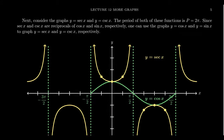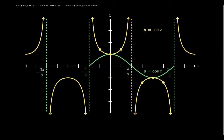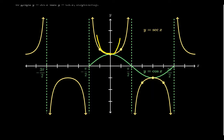You can see the graph of secant presently on the screen illustrated here in yellow. The graph of cosecant looks like these buckets — every once in a while you have a bucket that goes up, and every once in a while you have a bucket that goes down. The proper terms are that this portion of the graph is concave upward and this portion is concave downward.